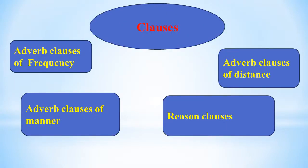A complex sentence contains one independent clause and one dependent clause. We place the more important idea in the independent clause and the less important idea in the dependent clause. There are three kinds of dependent clauses: adverb, adjective, and noun.